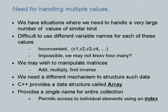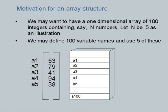So we need a different mechanism to structure such data, and the mechanism in C++ — as in most programming languages — is called an array. It provides a single name for the entire collection; that is what is important: a single name. However, it permits individual elements of that collection to be accessed through a mechanism called an index expression. We shall see exactly how arrays are declared, how index expressions are evaluated and used.